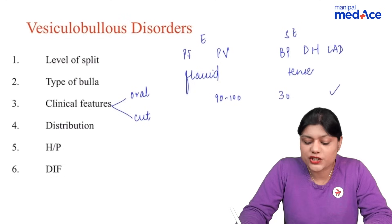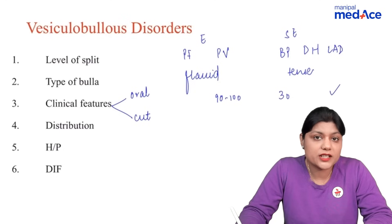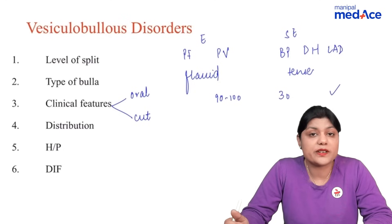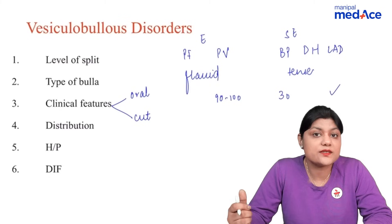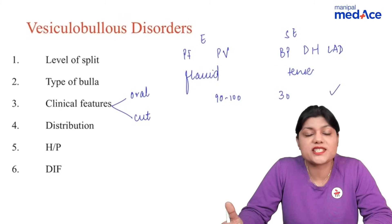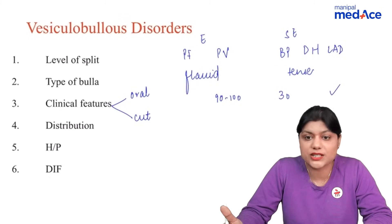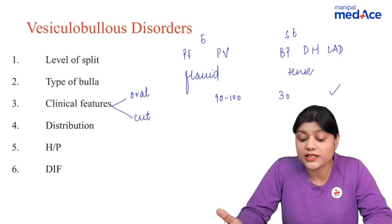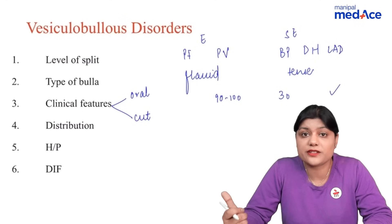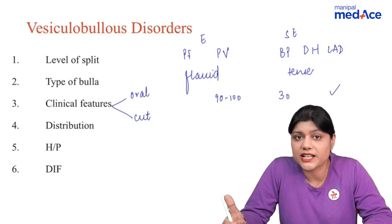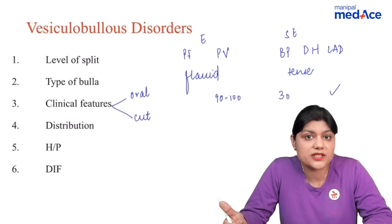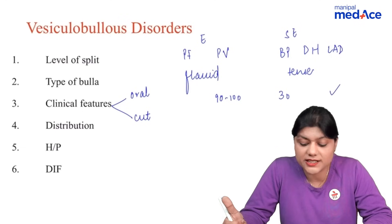Cutaneous features: pemphigus foliaceus presents with flaccid bulla, hardly seen. Pemphigus vulgaris presents with flaccid bulla with crusted erosions and no tendency to heal. Bullous pemphigoid, dermatitis herpetiformis, and linear IgA disease are all subepidermal and present with pruritus.